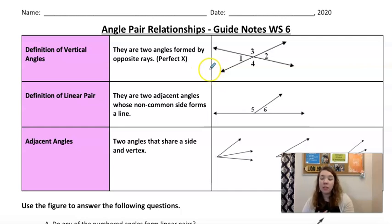So angle pair relationships, definition of vertical angles. When two angles are formed by opposite rays, we're making a perfect X. So here, 1 and 2 are vertical angles. They're straight across in this X. 3 and 4 are also vertical angles. They're straight across in the X. And these are always going to be congruent. So angle 1 is congruent or has the same measure as angle 2. Angle 3 is congruent to angle 4.